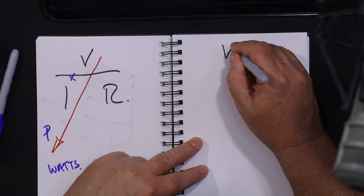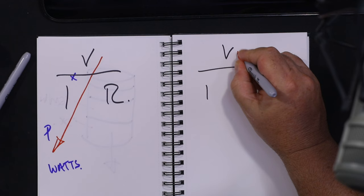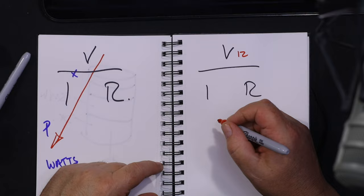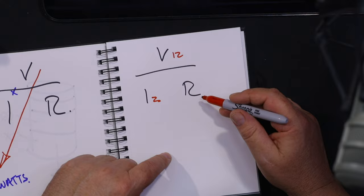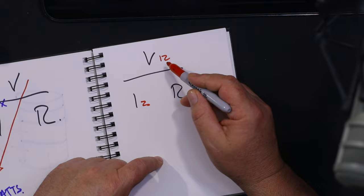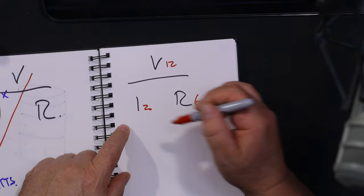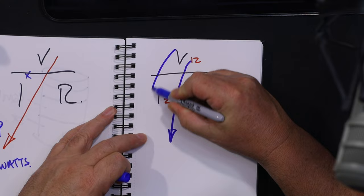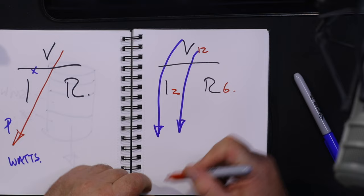Let's do a simple example using the values from last time: 12 volts, 2 amps, and 6 ohms. V over I equals R, so 12 divided by 2 is 6. We could also calculate current: V divided by R equals I — 12 divided by 6 is 2. Now for power: V times I, so 12 times 2 equals 24 watts.